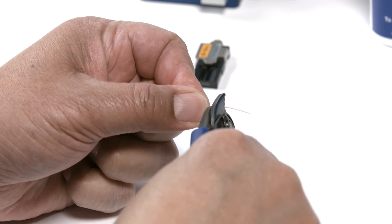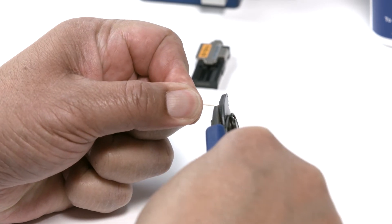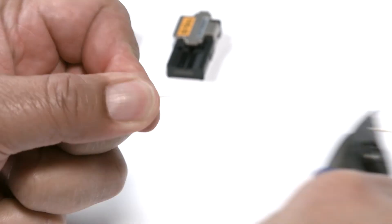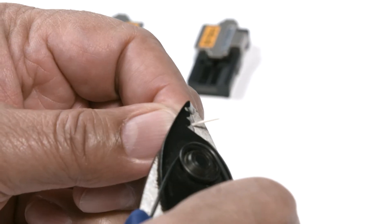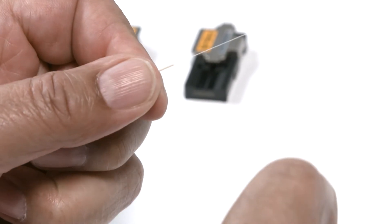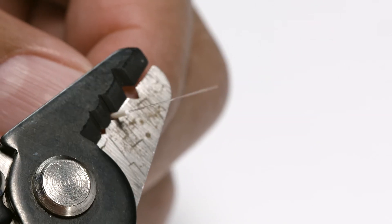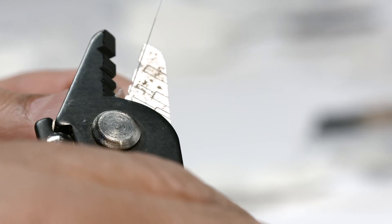Begin by stripping the fiber to expose the glass cladding layer. Use a stripping tool to remove an inch to an inch and a quarter total length of the fiber's buffer. Remove in half inch or less increments. Use the smallest hole in the strip tool to remove the last layer.